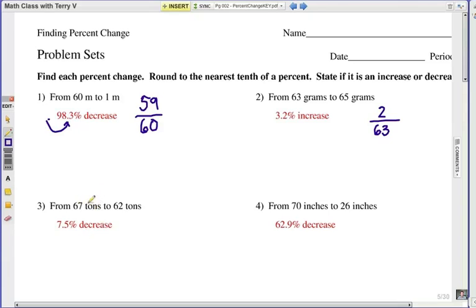Number 3, from 67 to 62, here you're going down by 5, and then you're going to divide it by 67. That will be a 7.5% decrease. And number 4, it is going to be from 70 to 26. If you subtract that, it's going to be 44 divided by 70, and you get 62.9% decrease.